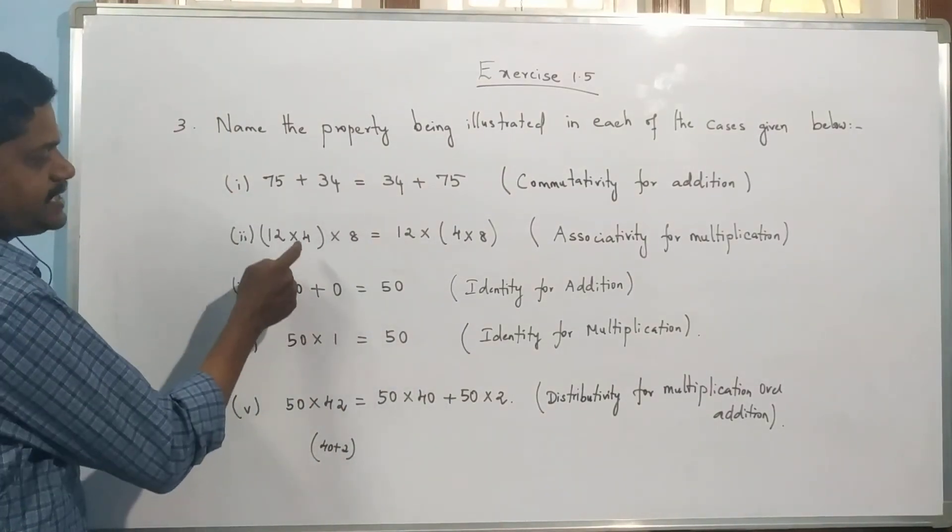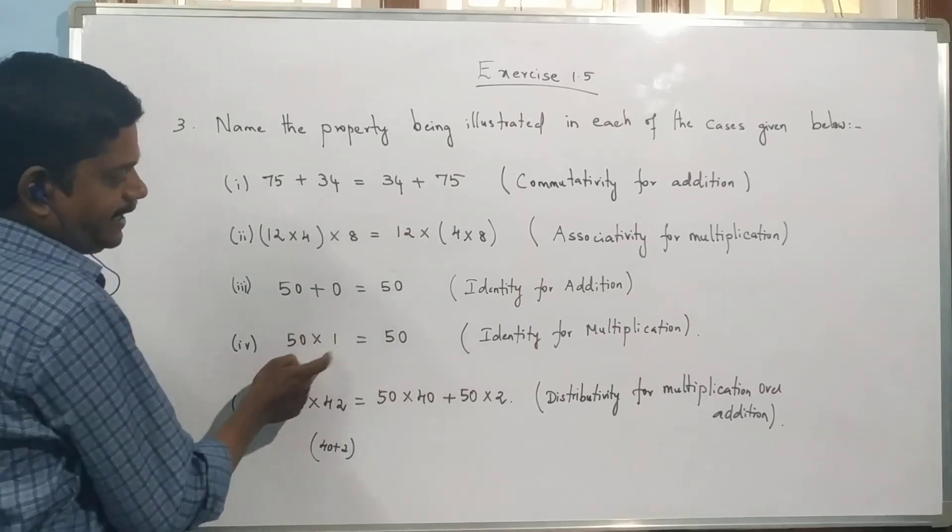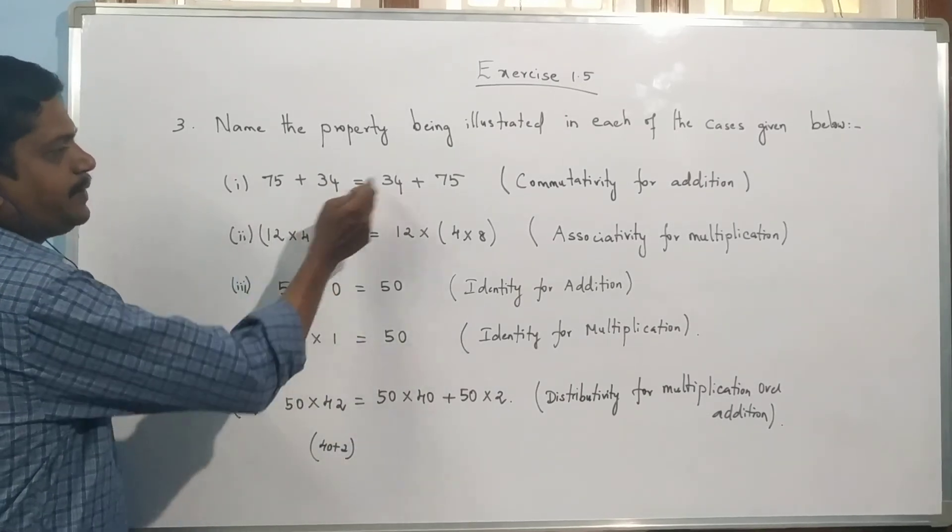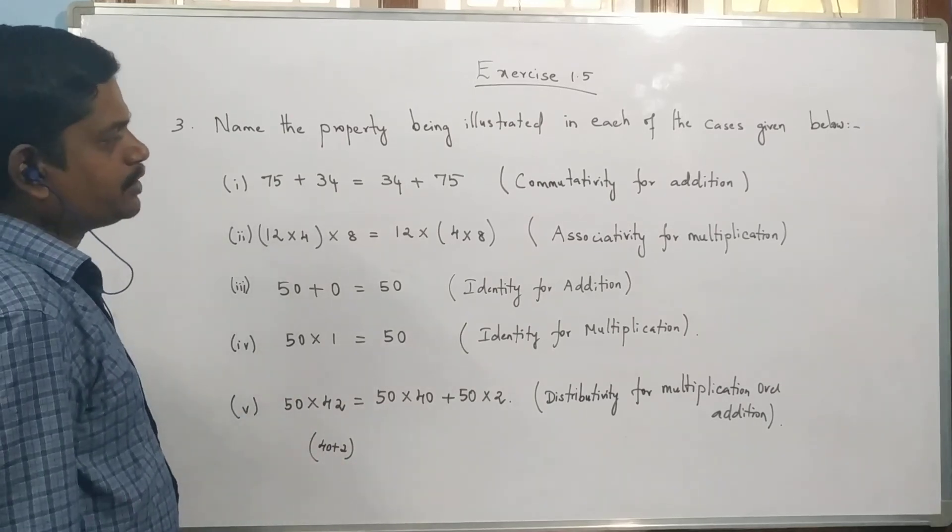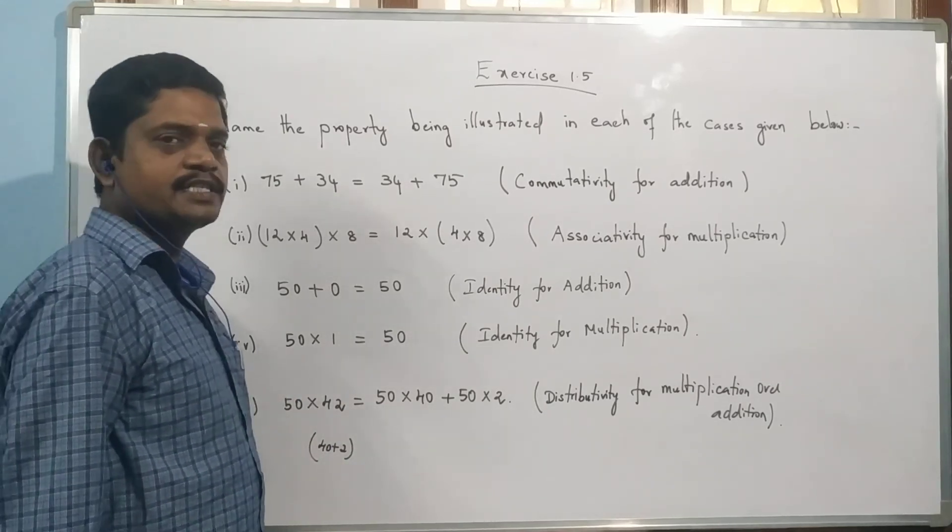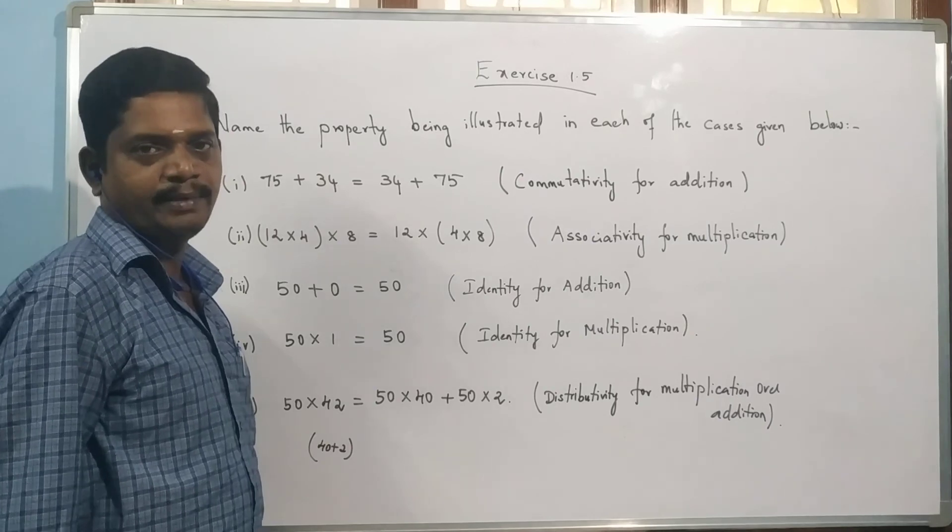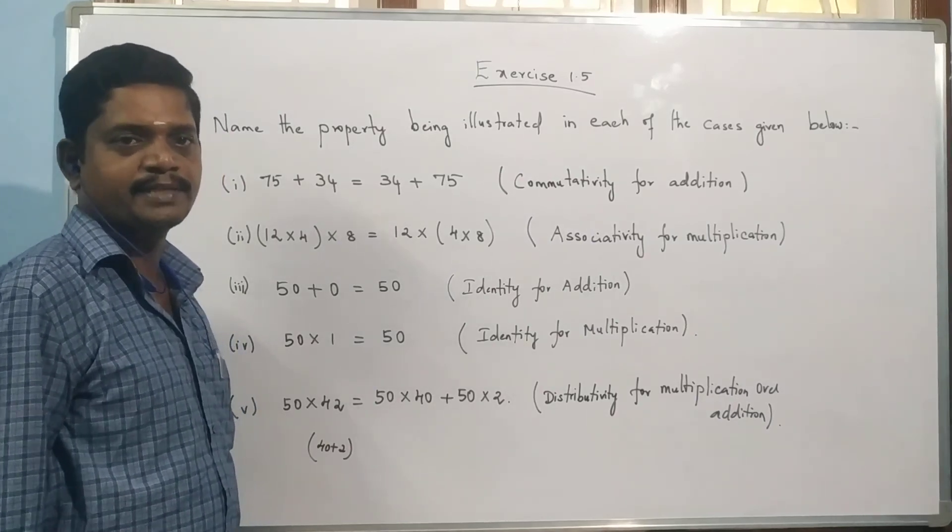First one: Commutative property. Second: Associative. Third: Identity. Fourth: Identity. Fifth: Distributive. Symbols are addition, addition, multiplication, multiplication, multiplication. So this is how the properties are illustrated. Please like, share, comment, and subscribe. Thank you.